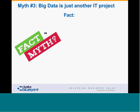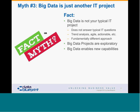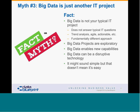Myth number three: big data is just another IT project. In fact, big data is not a typical IT project. It doesn't answer typical IT questions and doesn't work within a typical IT context, which tends to work on predictable outcomes — if I buy this system, it will produce these results. Big data is not necessarily about production; it's more about trend analysis and becoming more agile. These projects should be exploratory, finding new capabilities. It can be a disruptive technology, and that doesn't mean it's easy. Beware of the shiny object syndrome.